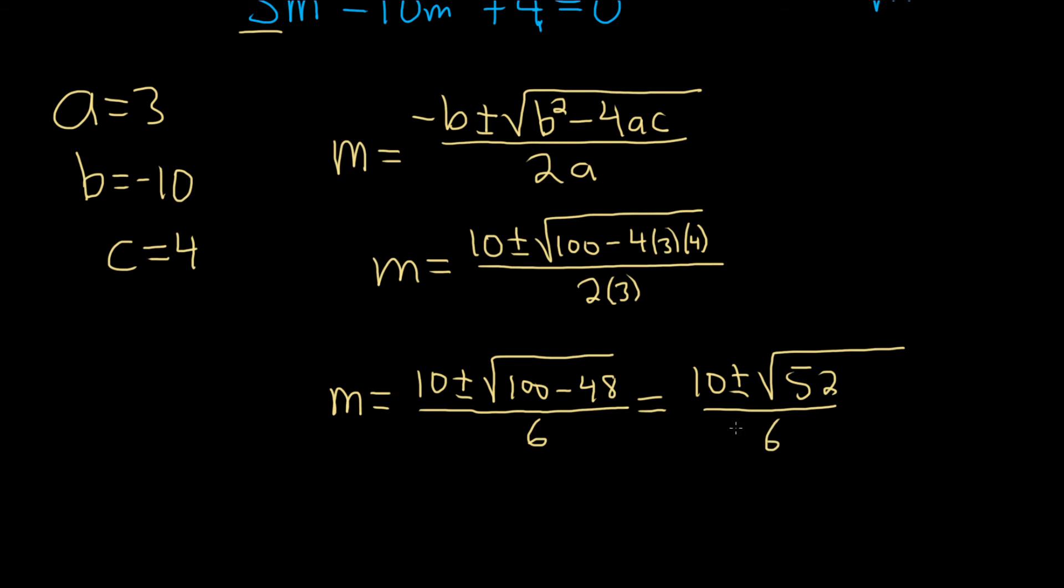So I'm trying to think, what's the easiest way to simplify 52? I think 13 times 4 is 52, so 52 is equal to 4 times 13, with square roots. So this will be 2 square root of 13. So m is equal to 10, plus or minus 2 square root of 13, over 6.